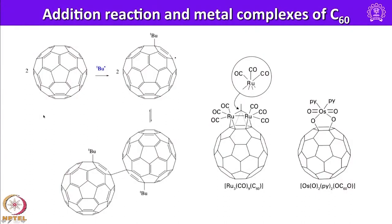One can also add carbonyls onto C60. You can take radicals and add them, or take an Ru3(CO)12 fragment and do addition reactions in this fashion. One can also treat C60 with osmium tetroxide in the presence of pyridine to form a corresponding adduct. All these reactions are very similar to reacting these species with a single alkene — essentially they resemble the reaction with an alkene or as simple as an ethylene molecule.